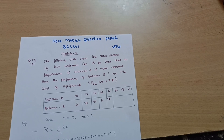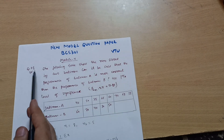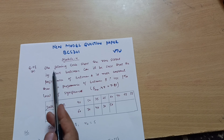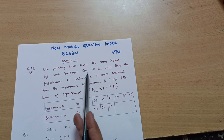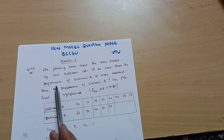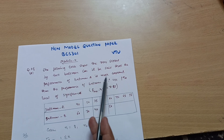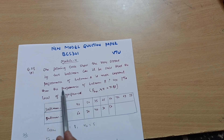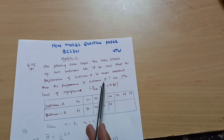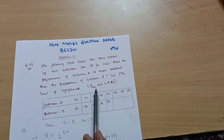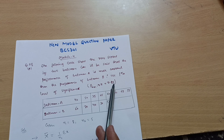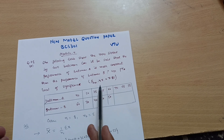Hello everyone and welcome back. In this video I will discuss question number 8a from model number 4. The following table shows the runs scored by two batsmen. Can it be said that the performance of batsman A is more consistent than the performance of batsman B? We use a one percent level of significance, where F at 0.01 is given as 7.85.